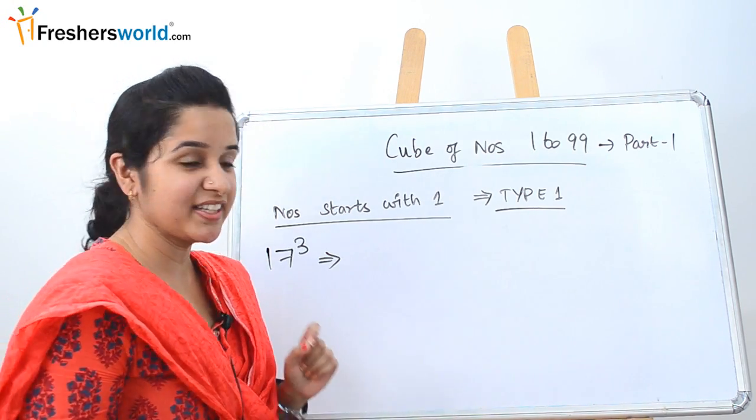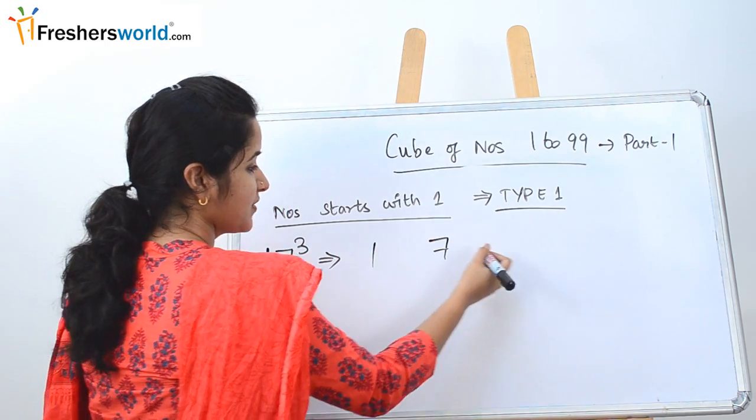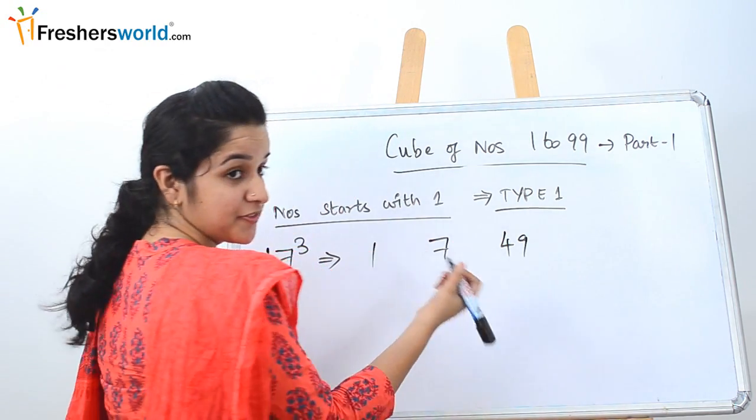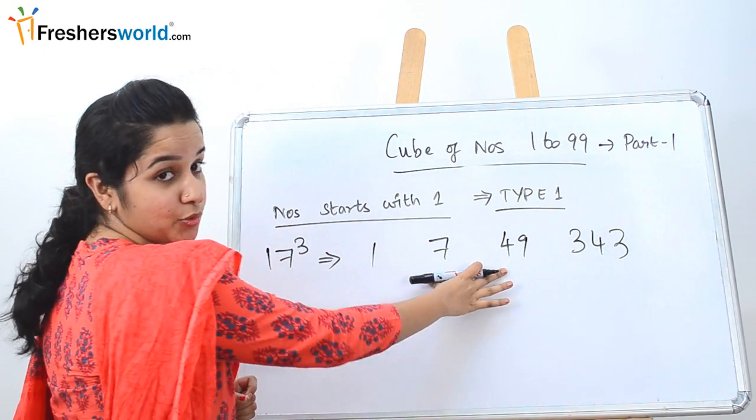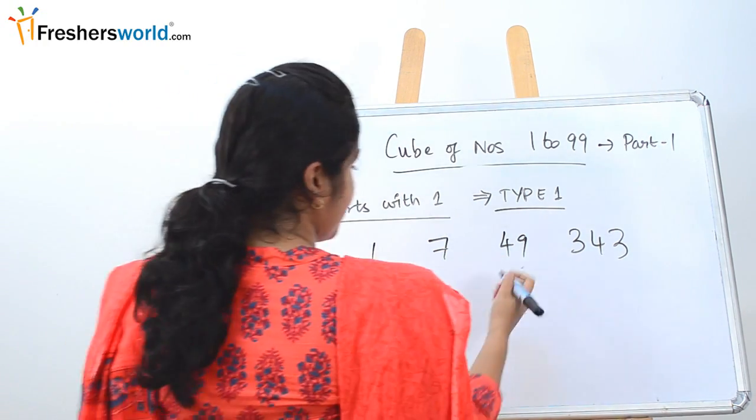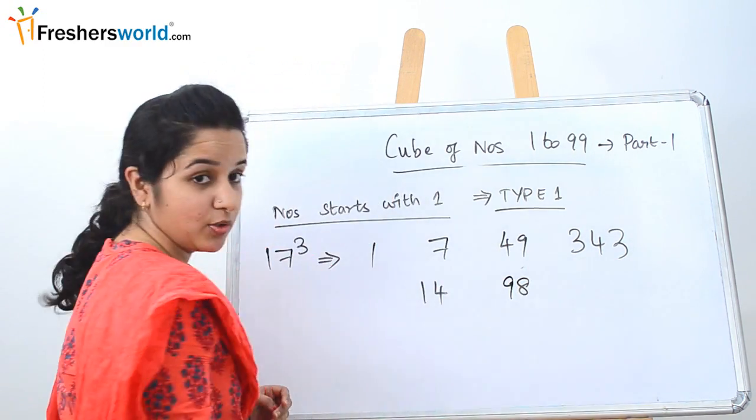The next problem we are going to solve is 17 cube. What did we do? 1, 7 as such. Square of 7 is 49. Cube of 7 is 343. Now we have to multiply the middle 2 digits by 2: 7 times 2 is 14. So we are going to multiply 49 by 2, which is 98. Now we are going to add it.